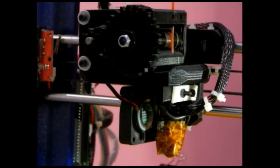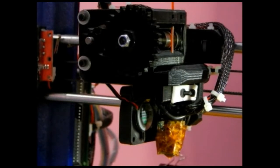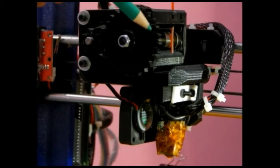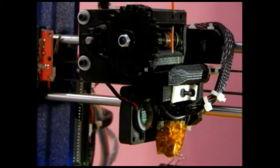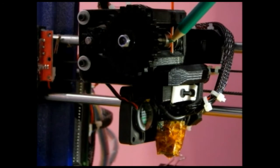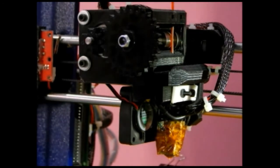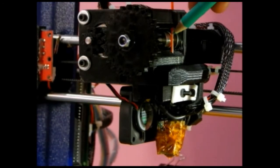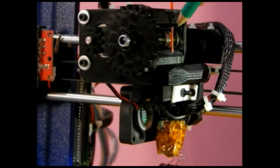The flow rate, that is amount of plastic fed into the nozzle, is controlled using this NEMA 17 motor through this gear and at the end this hob bolt. This hob bolt pushes the filament into the nozzle.